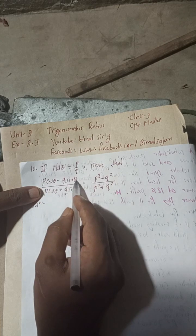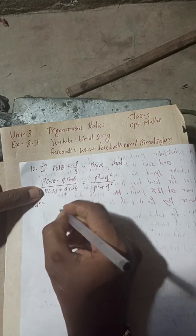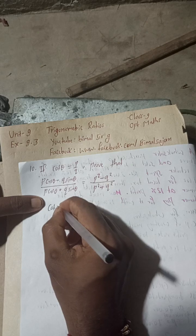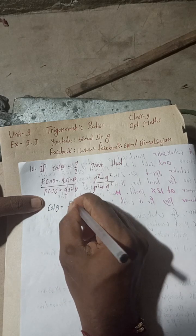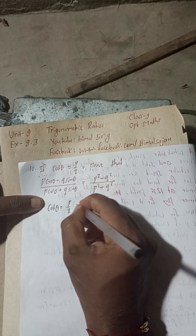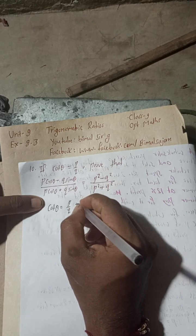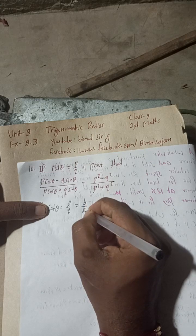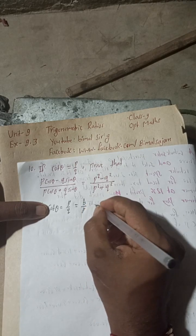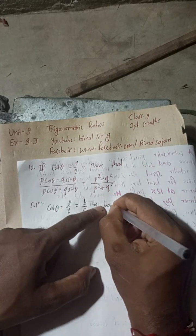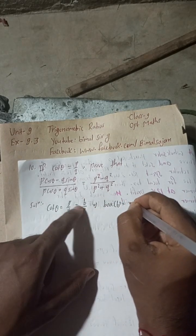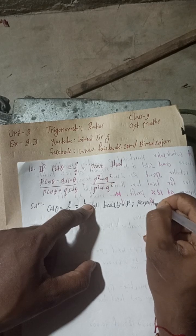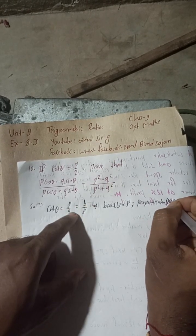We need to find the values of cos θ and sin θ. From cot θ = p/q, we know cot θ is base over perpendicular. So base (b) equals p, and perpendicular equals q.